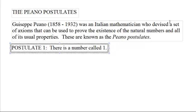Postulate 1: There is a number called 1. I know I used the number 1 in that, but forgive me for that. How do you know that there's even a number? We have to assume that there's a number. We can't prove that there's a number 1 without anything.